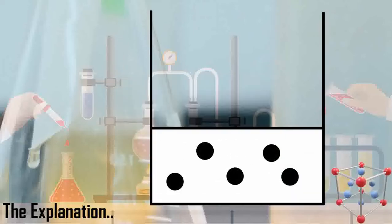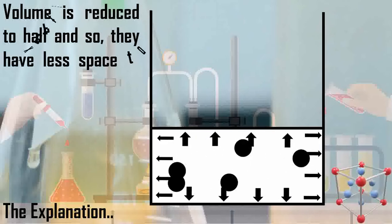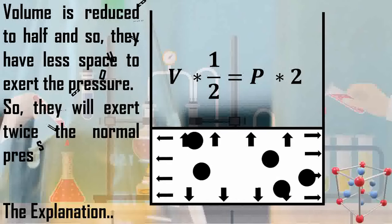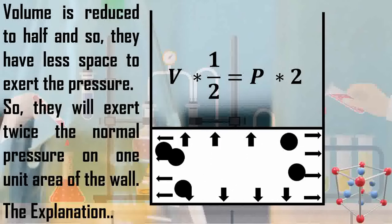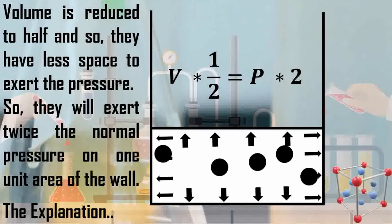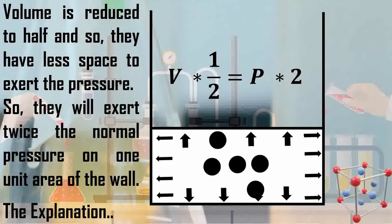Now, if we reduce the volume to half like this, volume is reduced to half here and so they have less space to exert the pressure. They will exert more pressure in one unit area of the walls. The pressure would be doubled because we halved the volume. Resulting, if the volume is reduced to half, the pressure will be increased to twice.